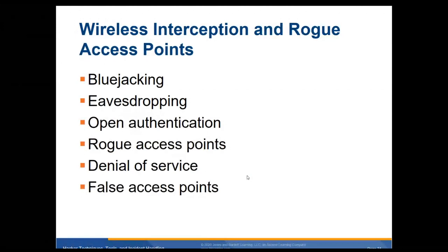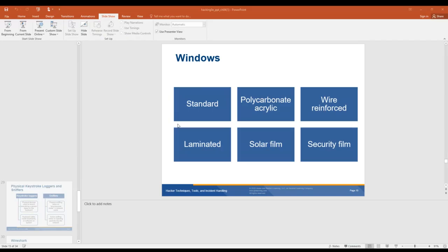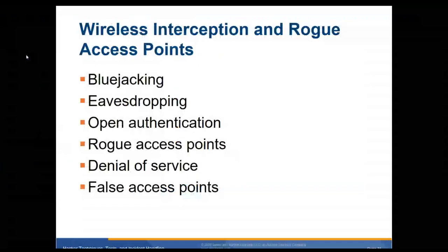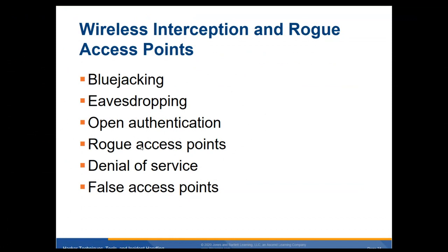Wireless interception and rogue access points: bluejacking — that's Bluetooth hijacking — eavesdropping where you're listening to people's conversations if they have open authentication on a WiFi. You could set up a rogue access point, denial of service by blocking other people, or setting up a false access point and denying people access that way.